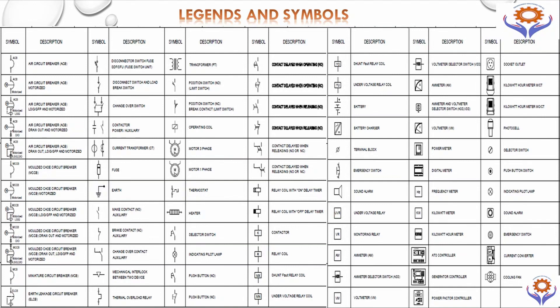On the next sheet, you can find the legends and symbols. If you don't know what you are exactly using, you can find it here — every legend has names with descriptions. For example, this is a normally open contact, this is a normally closed contact, and also motor symbols, thermostat symbols, relays, and sound alarms. You can find everything very easily in this legends and symbols section.